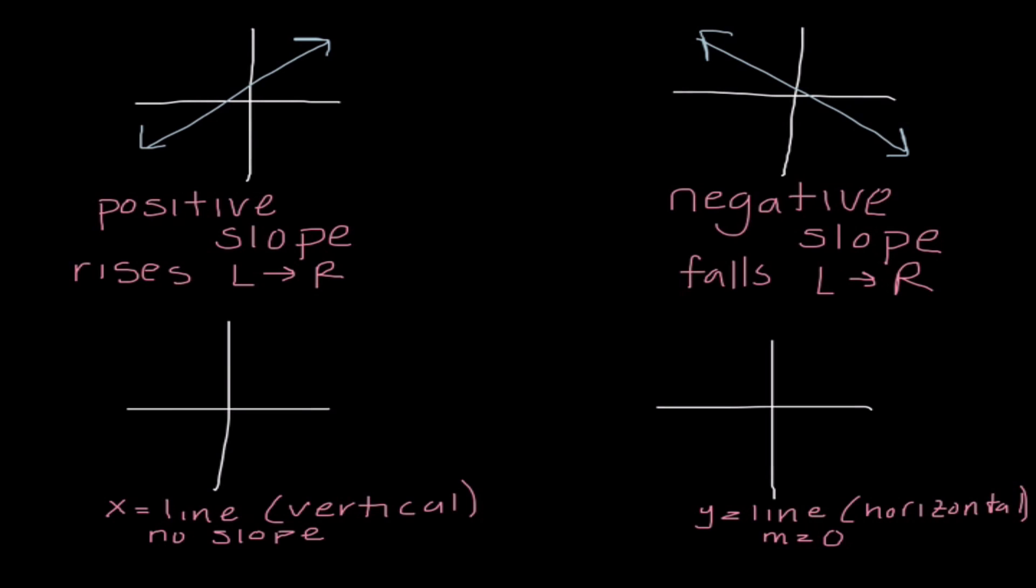The third and fourth types of slope, one is an x equals line, which is a vertical line. On an x equals line, we have no slope. It's just running straight up and down. A y equals line is a horizontal line, so it's running left and right. And a horizontal line has a slope of 0.